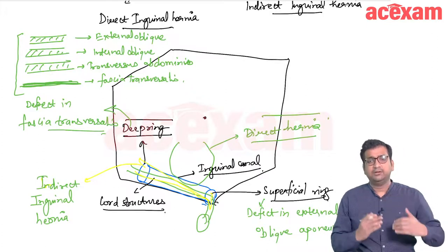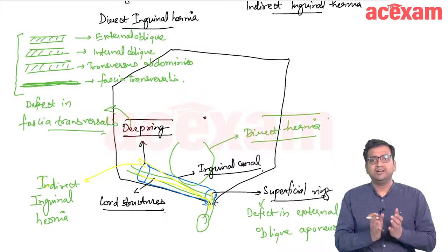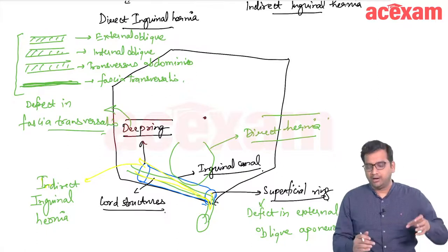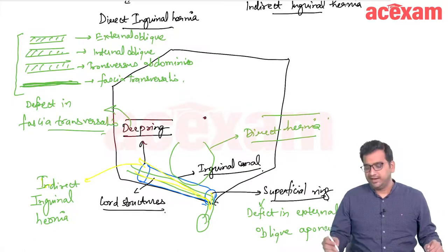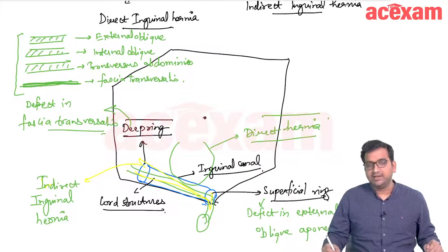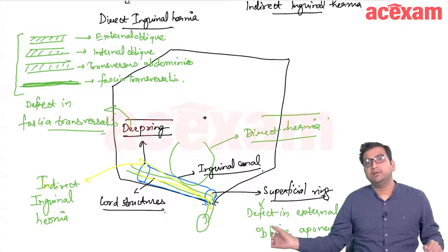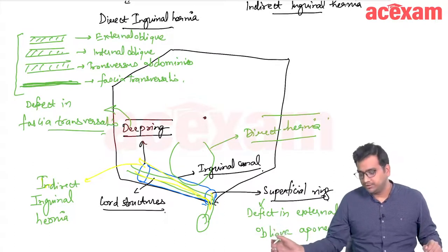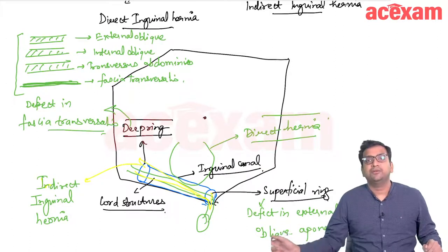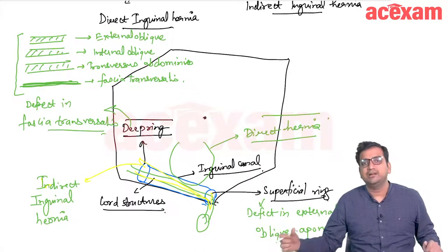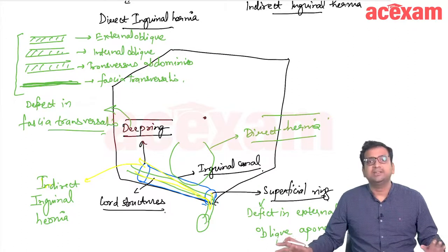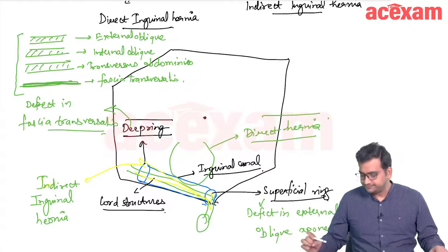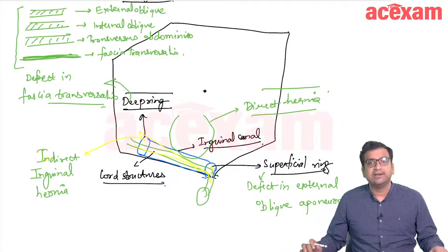The content from the abdomen comes out through the fascia transversalis, and through the inguinal canal it exits from the external oblique aponeurosis. This type of hernia is known as indirect inguinal hernia. This covers the basic anatomy of the inguinal canal.